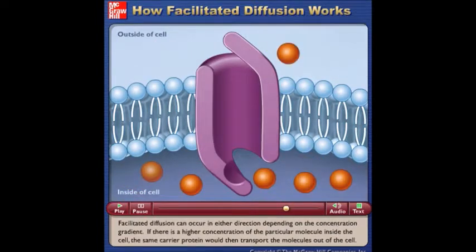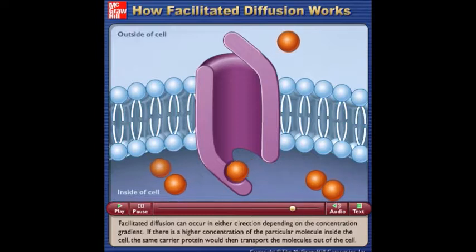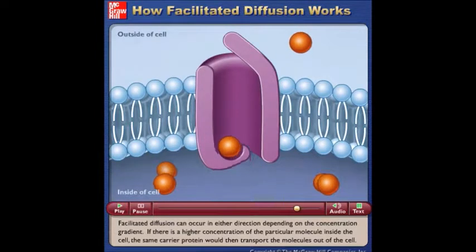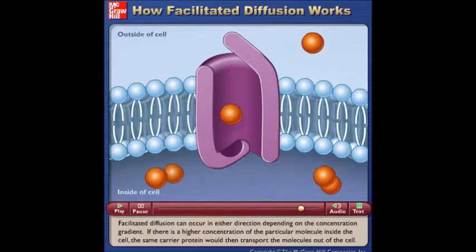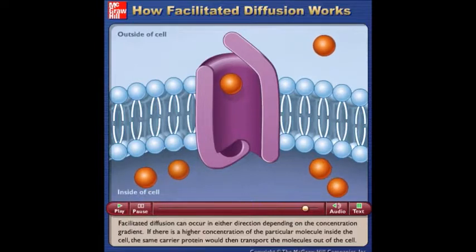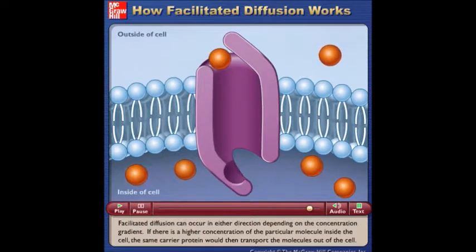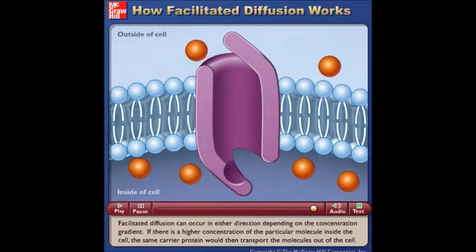Facilitated diffusion can occur in either direction depending on the concentration gradient. If there is a higher concentration of the particular molecule inside the cell, the same carrier protein would then transport the molecules out of the cell.